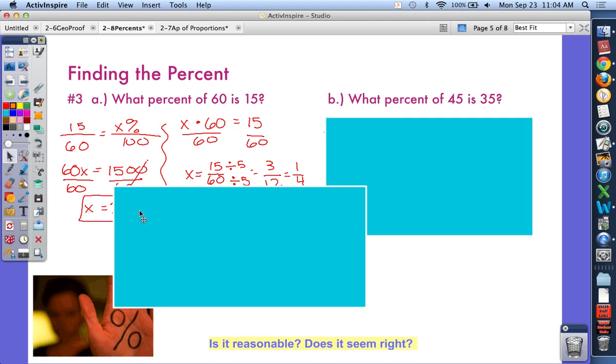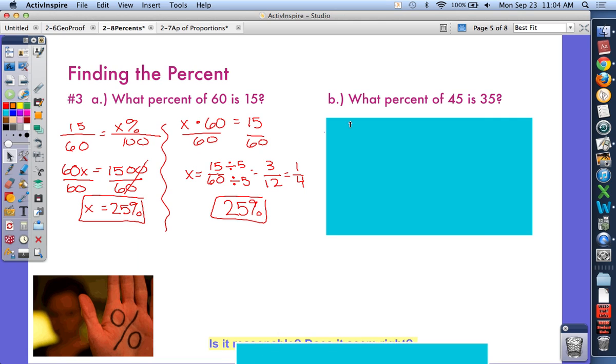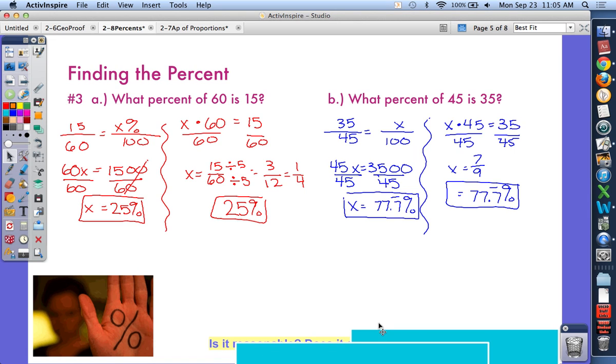Let's take a look at your work. You should have tried each problem. I'm going to show my work both ways. On the first one, you should have 25%. On the second one, you should have 77.7%. If you don't have these numbers, please pause and make corrections. Try to find where you made your mistake and correct it.